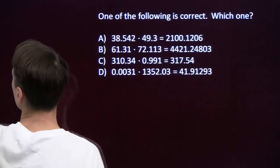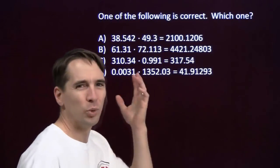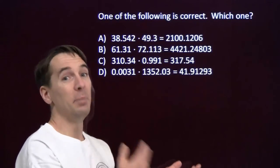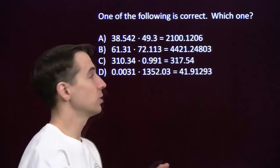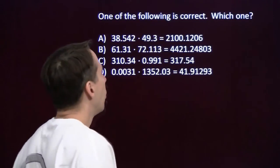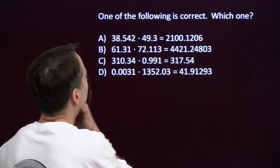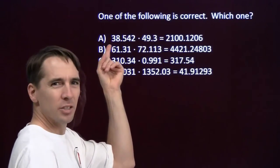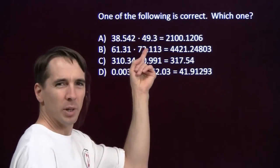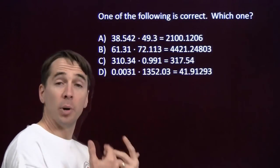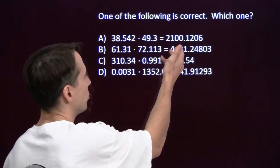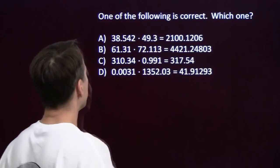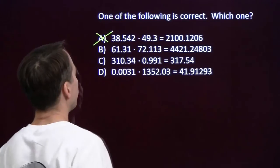Let's try some multiplications. My calculator's really bad at multiplication — it only got one of these right and missed the other three. So we have to figure out which three are wrong and which one's right. The first one: I'm multiplying a number that's a little bit less than 40 by a number that's a little bit less than 50. I should get a product that's a little bit less than 2,000. That's not a little bit less than 2,000 — calculator whiffed on that one.